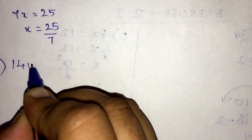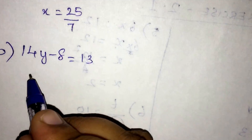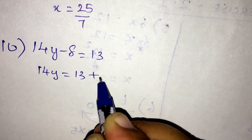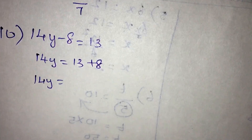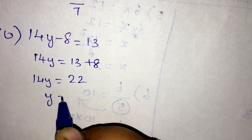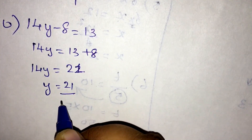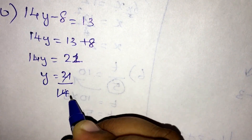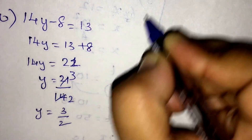Equation number 10: 14y minus 8 is equal to 13. So 14y will be equal to 13 plus 8, which is 21. Therefore y equals 21 by 14. Simplifying — 7 times 2 and 7 times 3 — the value of y will be 3 by 2.